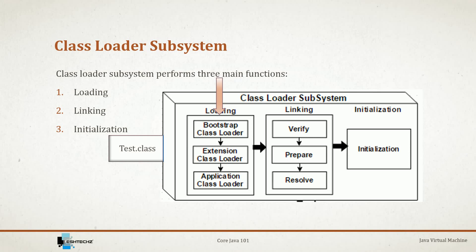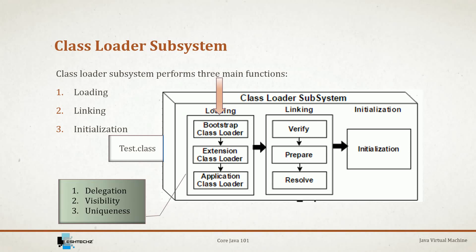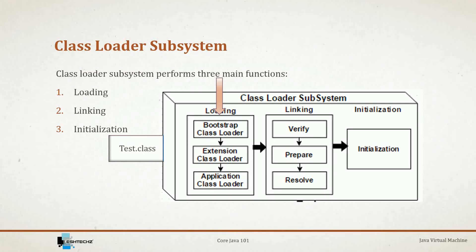The class loader in Java works on three principles. The first is delegation: all requests get forwarded to the parent class loader, and only if the parent is unable to load will the current class loader load the class. The next is visibility: child class loaders can see classes loaded by the parent, but vice versa is not true. The last is uniqueness: this principle allows classes to be loaded only once, achieved through delegation.